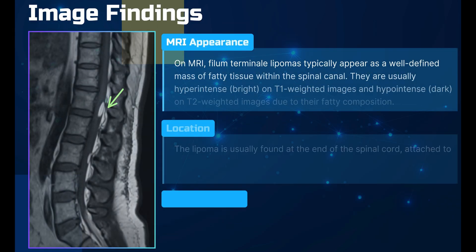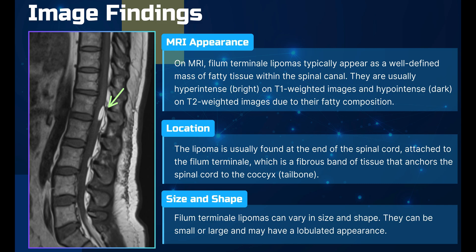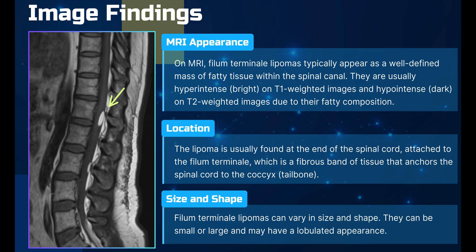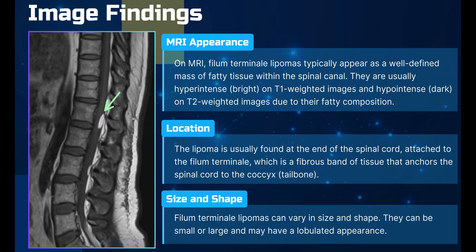The findings are T1 and T2 bright lesion which gets suppressed on fat saturation sequence. This is T1 weighted imaging showing the lesion at the terminal cord. The cord is typically ending in this case at the L2 level and is not extending up to S1. So the tethered cord was absent.